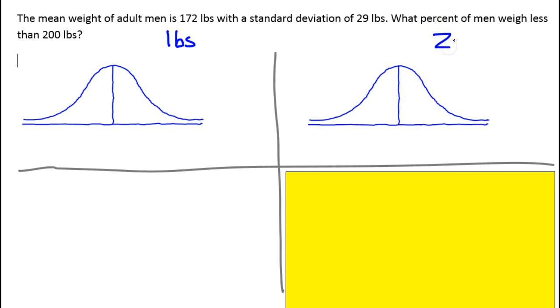On this side, we will do Z-score. The mean weight is 172 pounds, so we'll put 172 right here. The mean for a Z-score is always 0, so we'll put 0 right there. Now, the weight we're interested in is 200 pounds. That's greater than 172, so I will mark it over here on the right-hand side. 200.